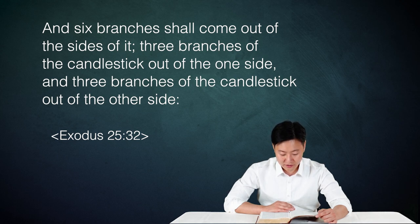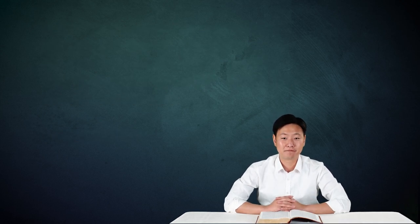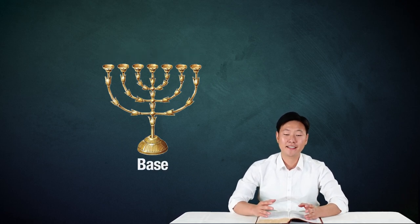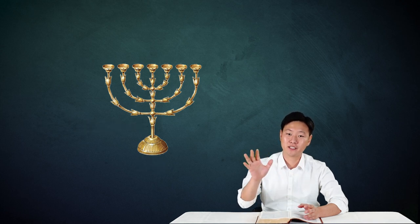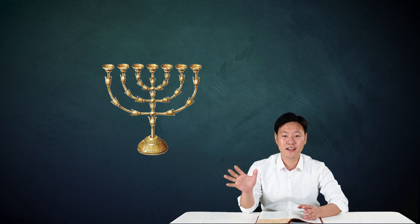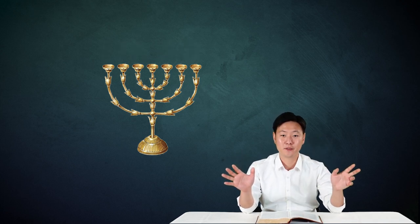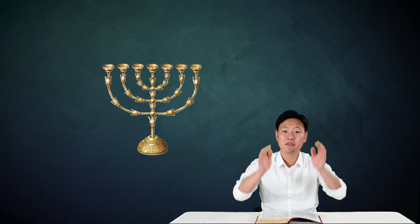Three branches of the candlestick out of one side and three branches of the candlestick out of the other side. When we look at the candlestick, there is a base and there is one shaft. On the right side of the shaft there are 3 branches, and on the other side there are another 3 branches. So it starts from one shaft, but it becomes 7 branches.